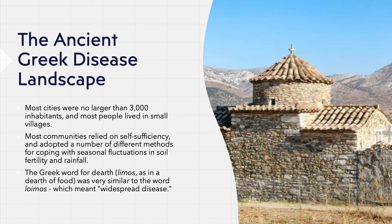Indeed, the Greek word for dearth, lemos, as in a dearth of food, was very similar to the word loimos, which meant widespread disease. The similarities between lemos and loimos speak to the realities of a world in which the line between having enough to feed one's family and desperately searching for anything to eat was incredibly thin. As such, whether in town or countryside, malnutrition and famines were a major factor in the general demographic outline of ancient Greece. Yet, while famine and malnutrition were fairly common, the scattered, spread-out, largely immobile nature of the Greek population protected most from outbreaks of epidemic disease, instances like the Plague of Athens notwithstanding.